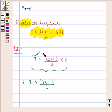And second is (3x + 11)/2 ≤ 11, and this we get from the second part.